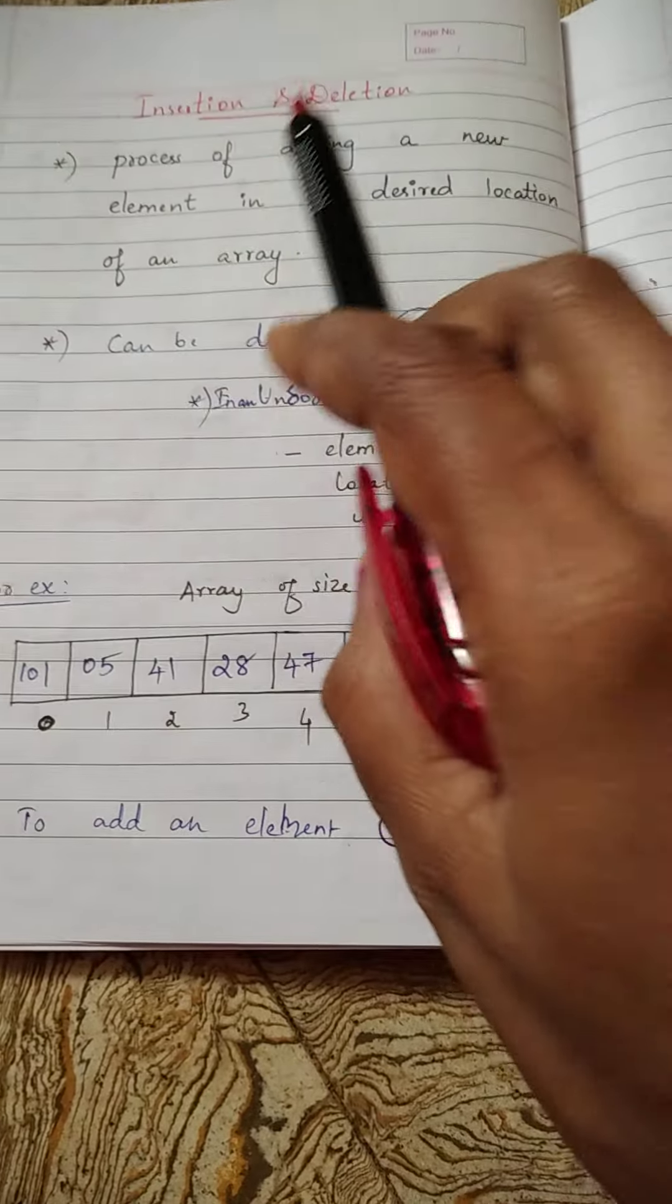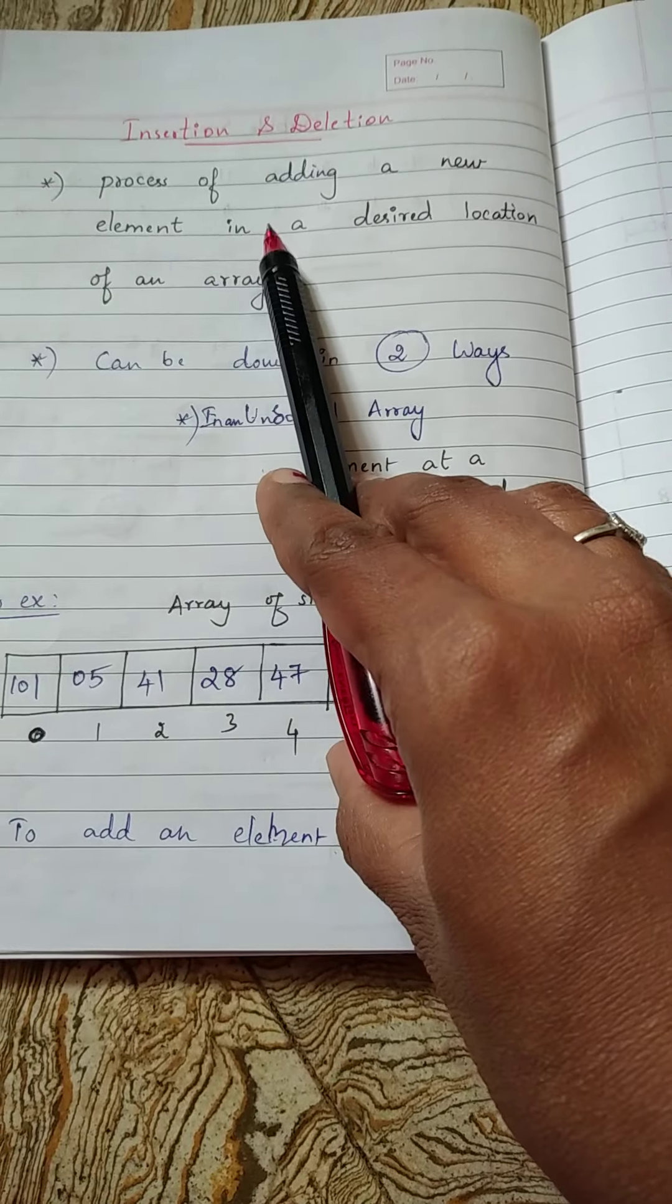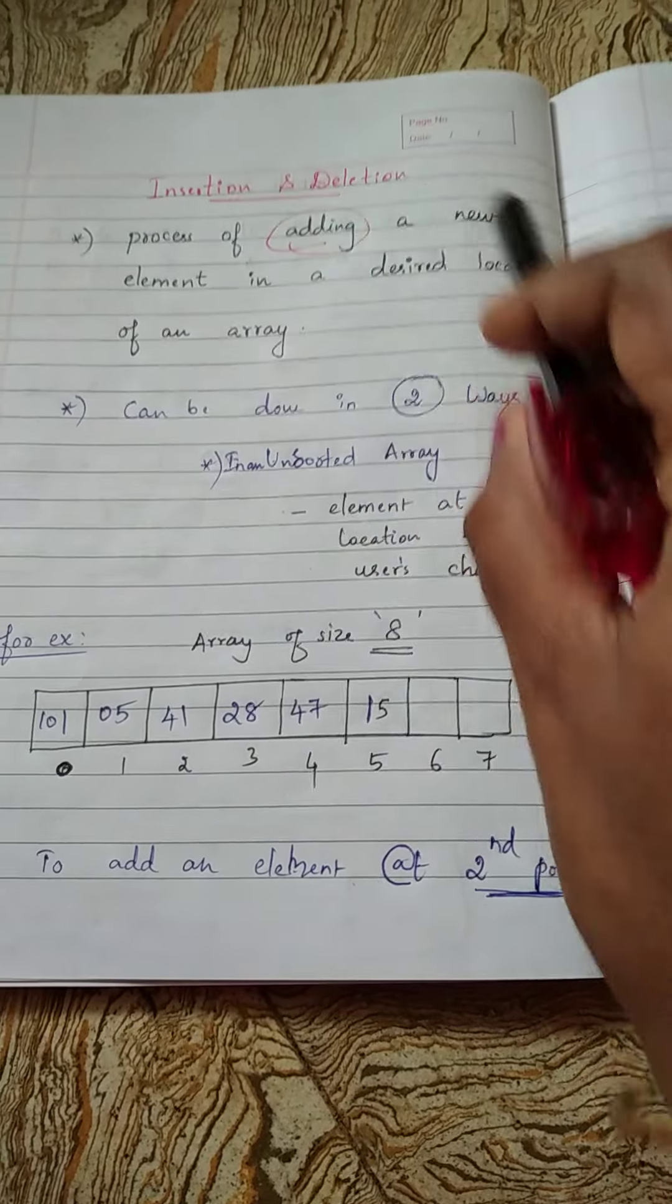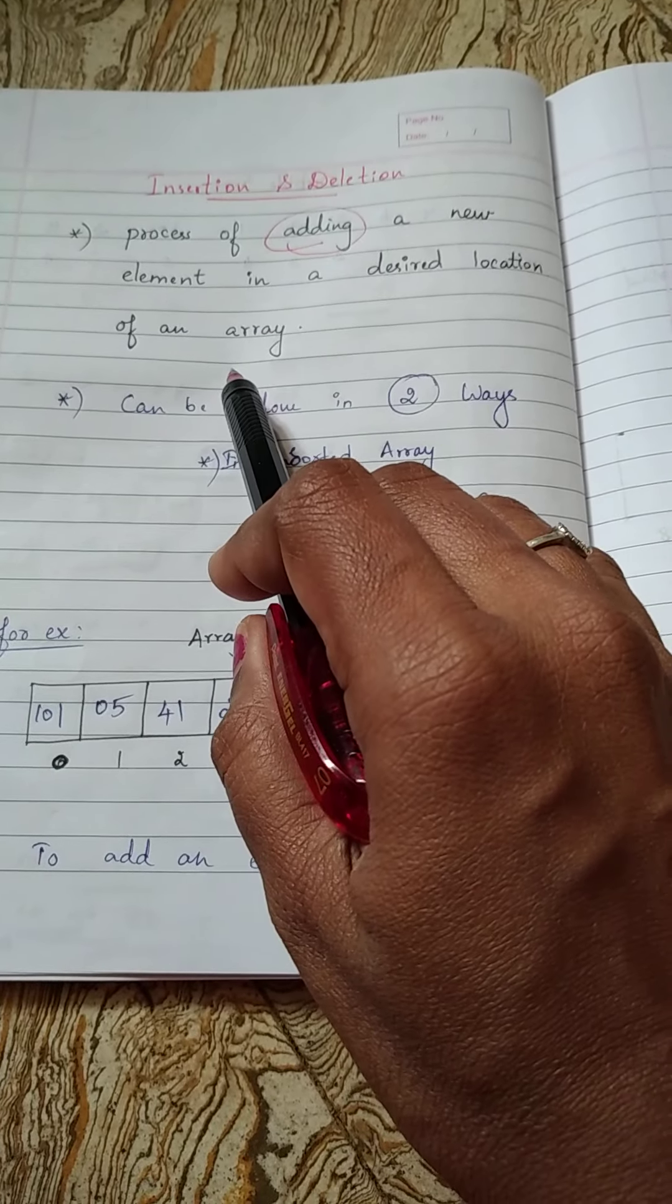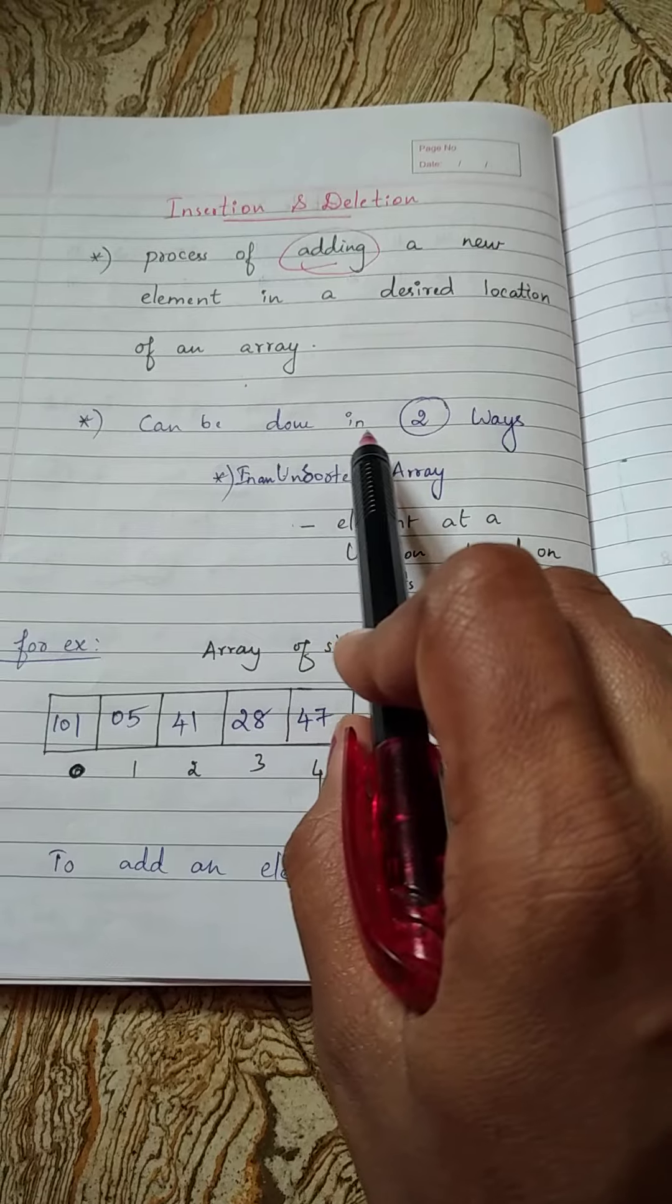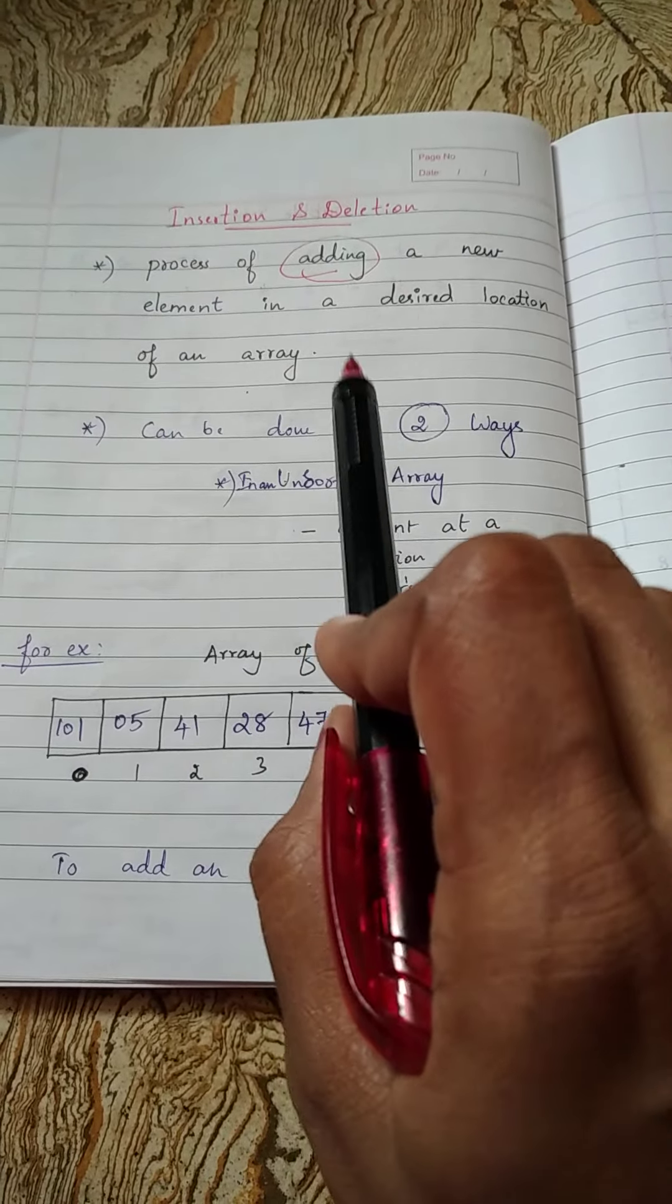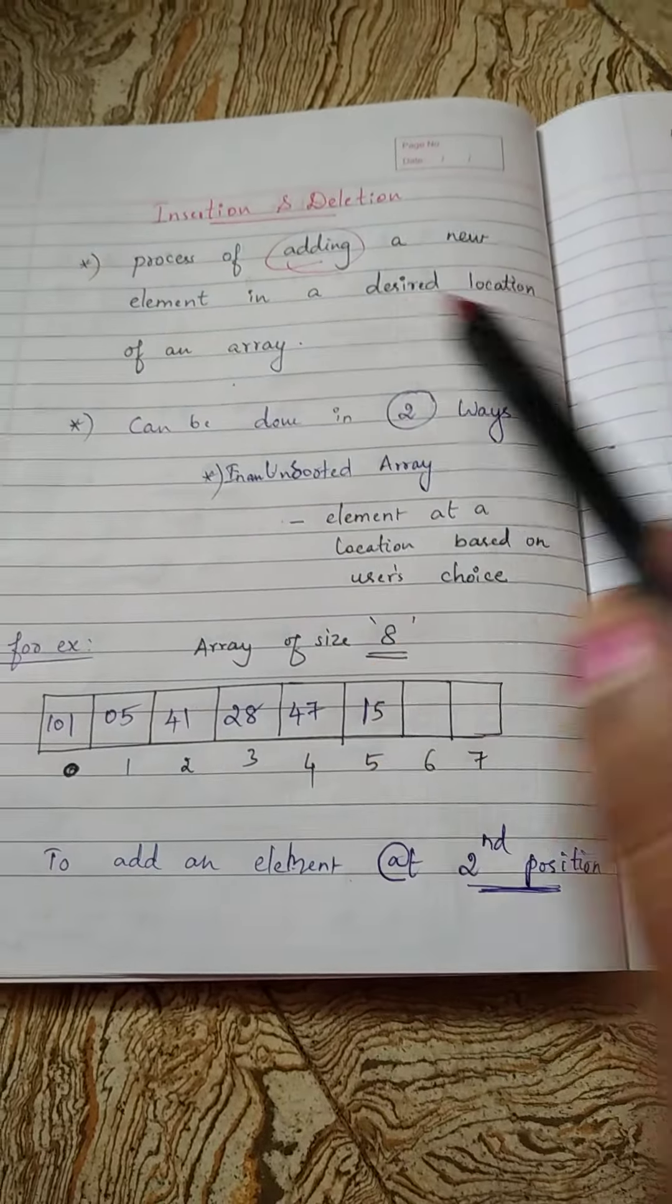So first we will look at what is insertion. Insertion is a process of adding a new element in a desired location of an array. For doing this, you can follow two different ways and this mainly depends on whether you are having a sorted array or unsorted array.